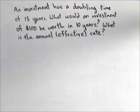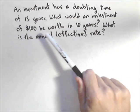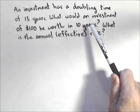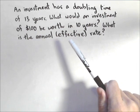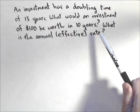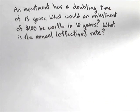We have an investment that has a doubling time of 13 years. First thing we're going to do is find out what an investment of $100 would be worth in 10 years, and then we're going to find out what's the annual or effective rate. What percentage are we gaining each year?